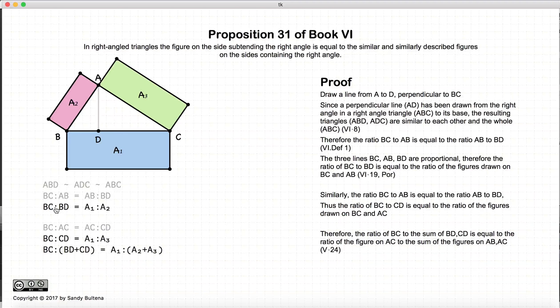So now we have BC to BD equals A1 to A2, BC to CD equals A1 to A3. So we can add these two together using Proposition 24 Book 5, and we have that BC to the sum of these two is equal to A1 compared to the sum of these two.